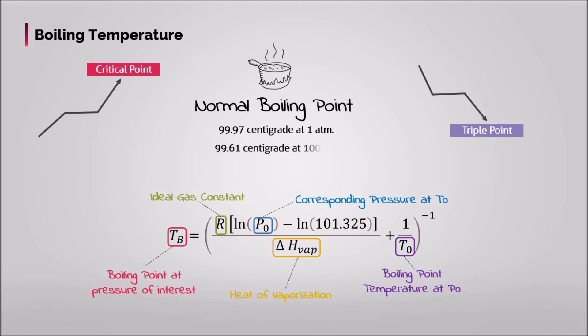The IUPAC recommended standard boiling point of water is 99.61 degrees Celsius or 211.3 degrees Fahrenheit at a standard pressure of 100 kilopascal or 1 bar.